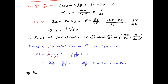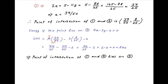Therefore the point of intersection of lines 1 and 2 lies on line 3. It therefore follows that the given three lines are concurrent, which is the required result.